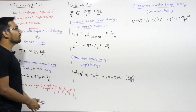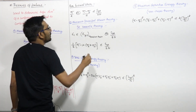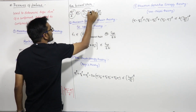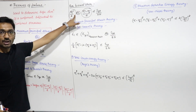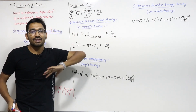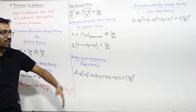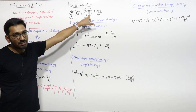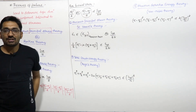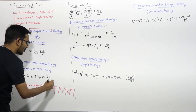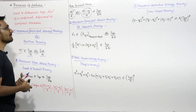For a biaxial state, the absolute tau max will be either sigma 1 by 2 — when sigma 1 and sigma 2 are of the same nature — or (sigma 1 − sigma 2)/2 when they are of opposite nature. That should be less than or equal to SYT by 2N. This is how you can calculate the dimension using the maximum shear stress theory.